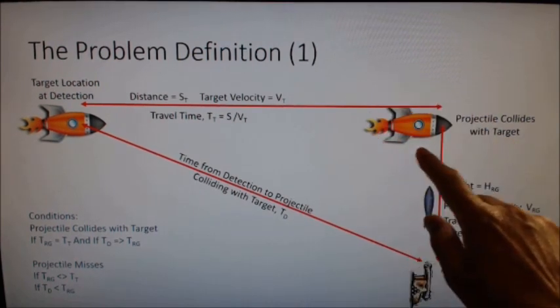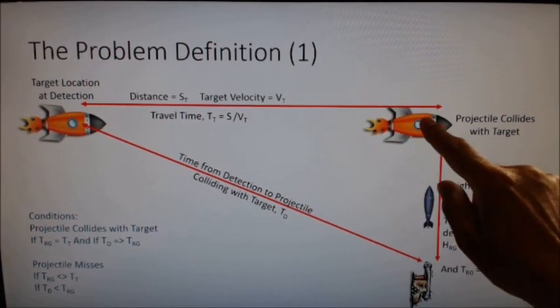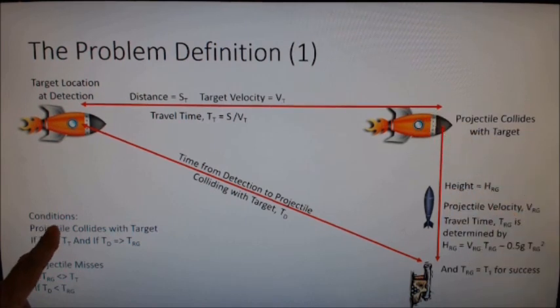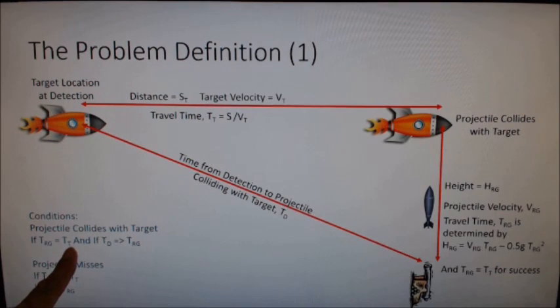Mission success is the collision of the projectile with the target. And the conditions are the projectile collides with the target if the time travel for the projectile, railgun projectile, is equal to the time travel of the target, approximately, for a simple model like this.